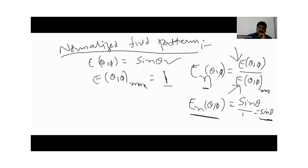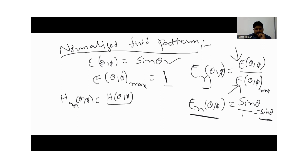Similarly, what is the formula for the magnetic field? If the field pattern is expressed in terms of magnetic field, then H_n(θ,φ) = H(θ,φ) / H(θ,φ)_max.